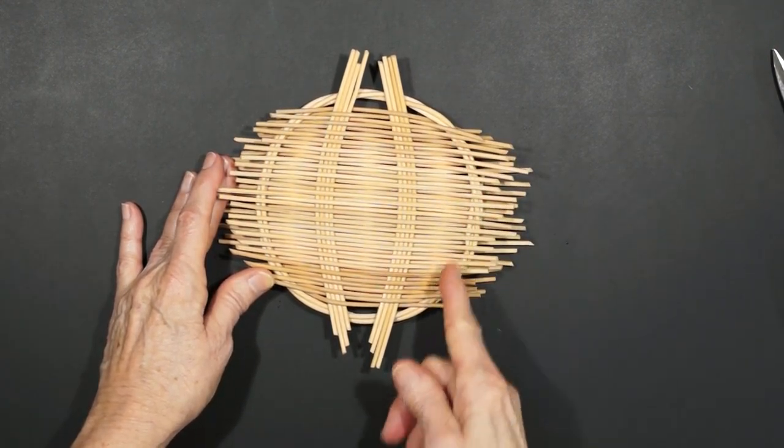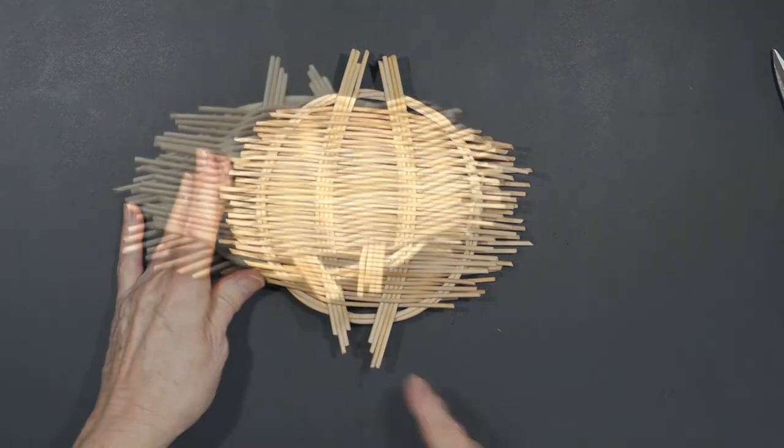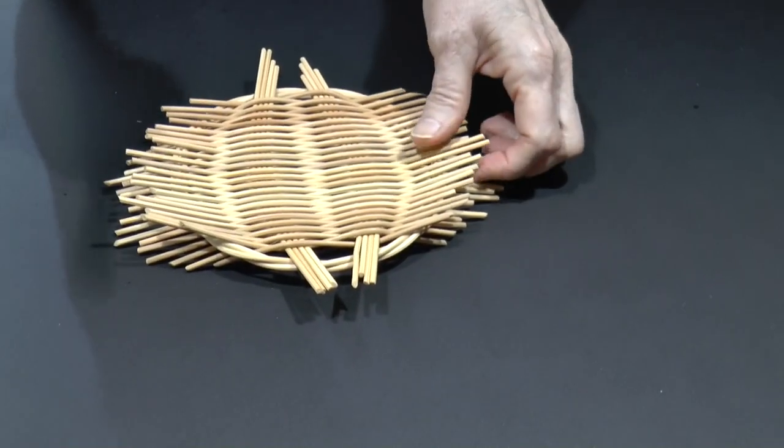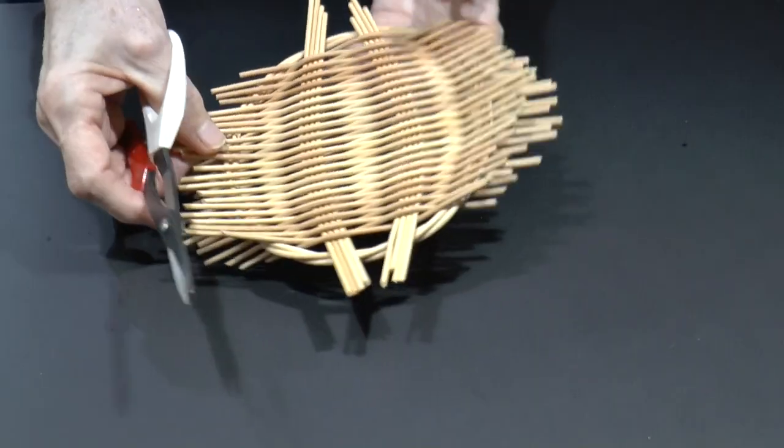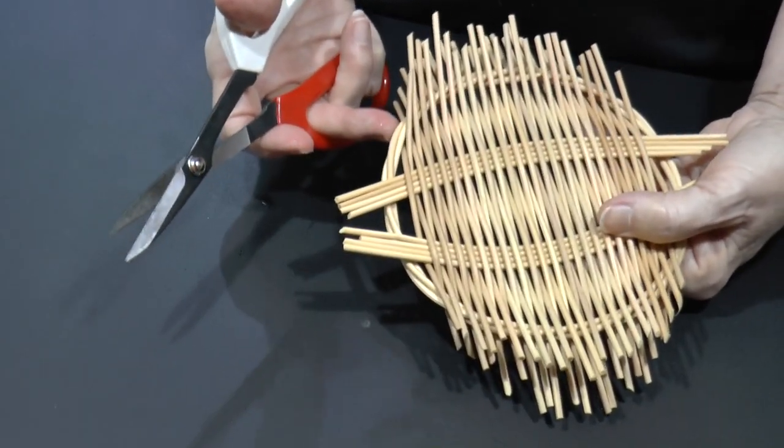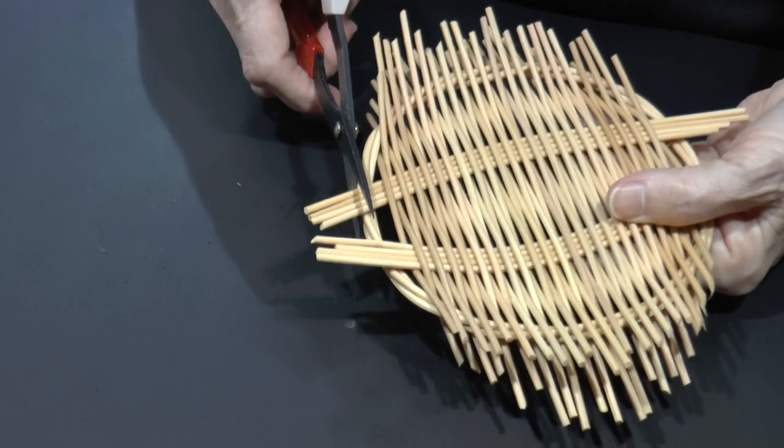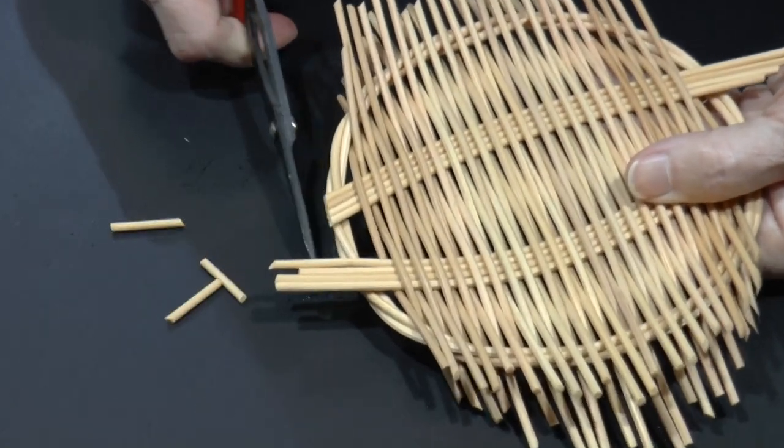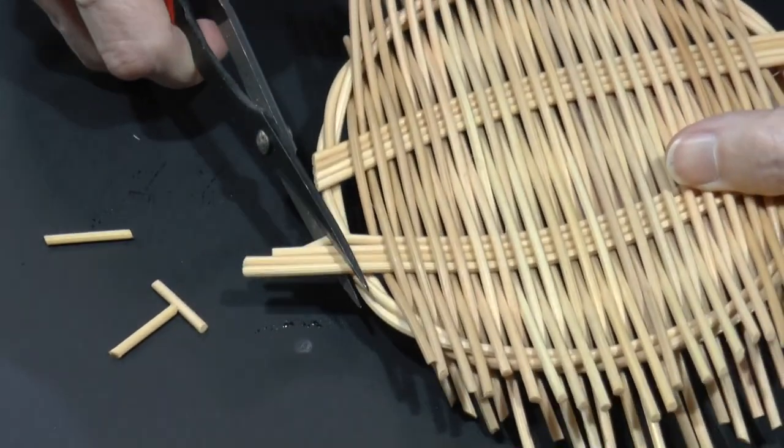At this point, make sure your shaping is good. Next, we will trim the excess off the weavers and the spokes. I usually start with the spokes, using the ring as a guide. If I cut all four adjacent spokes at the same time, they should end up even.